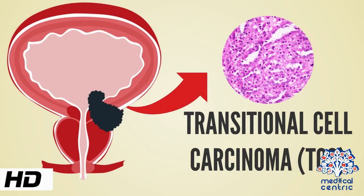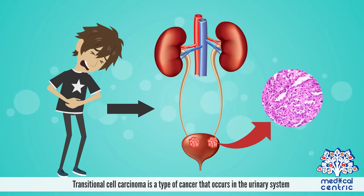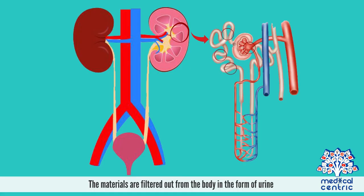Today's topic is Transitional Cell Carcinoma, or TCC. Transitional cell carcinoma is a type of cancer that occurs in the urinary system. The urinary system is a group of organs in the body that helps with filtering out excess fluid and other materials from the bloodstream. The materials are filtered out from the body in the form of urine.